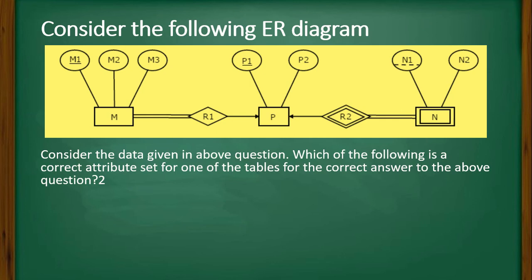Another question is given on the same diagram. Consider the data given above question, which of the following is a correct attribute set for one of the tables for the correct answer to the above question.